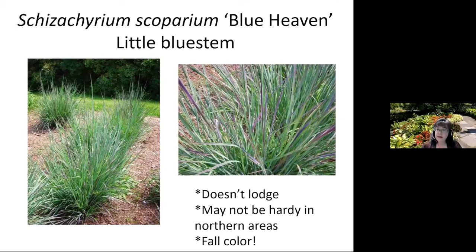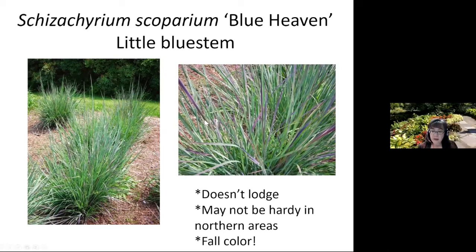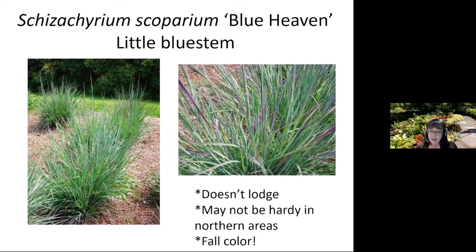Blue Heaven little bluestem also takes drought quite well. It starts the season with a beautiful blue-green coloration, then develops anthocyanin pigments — that red coloration in fall. Just gorgeous. It's not going to lodge; it stands straight up. It's less hardy in northern North Dakota but does quite well in the southern half of the state. It's a beautiful grass whether you put it in a rain garden or in a drier environment.